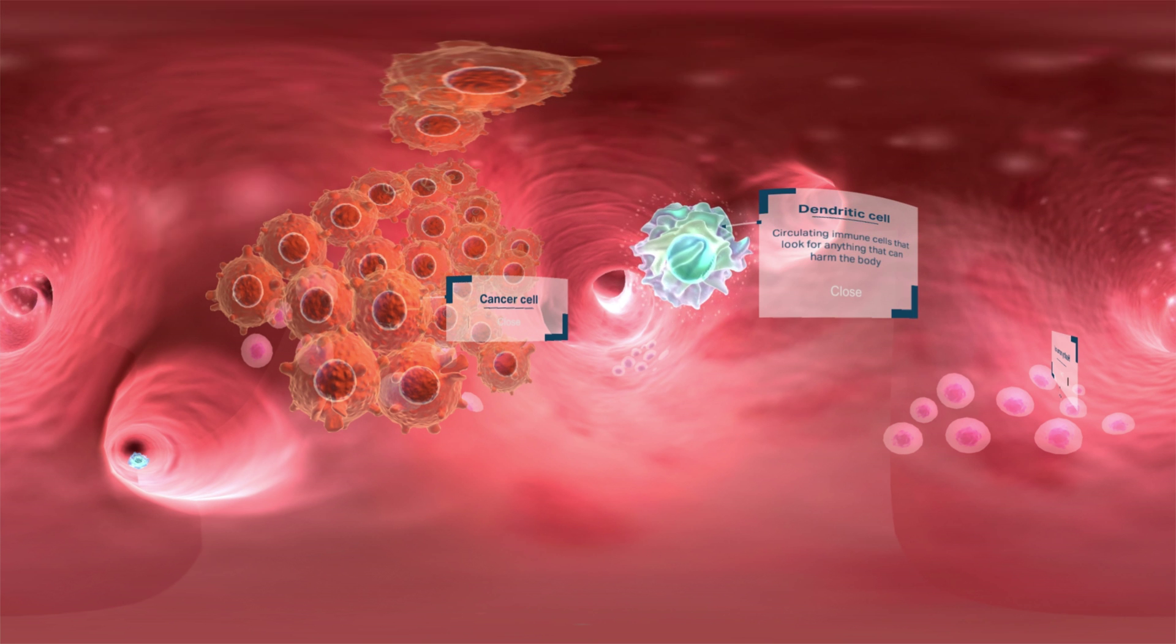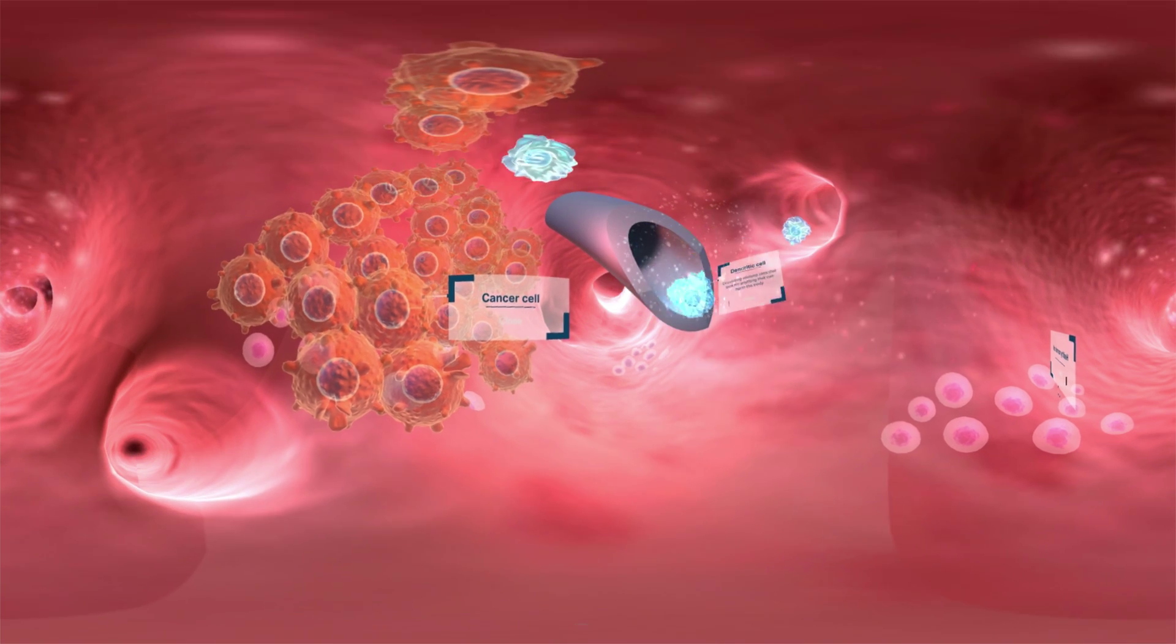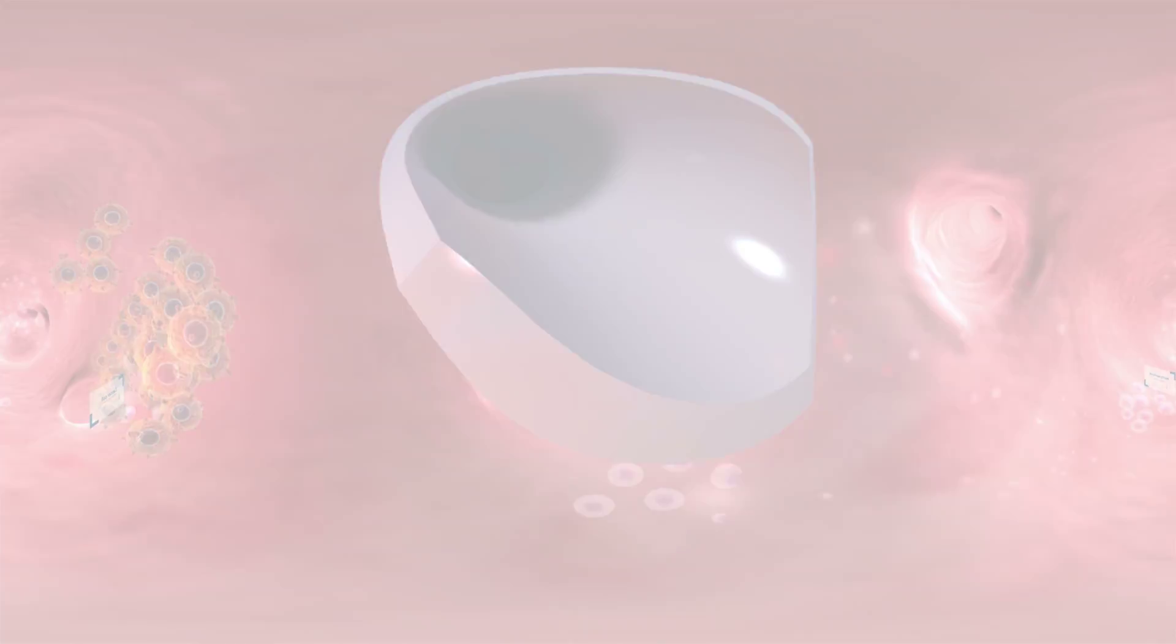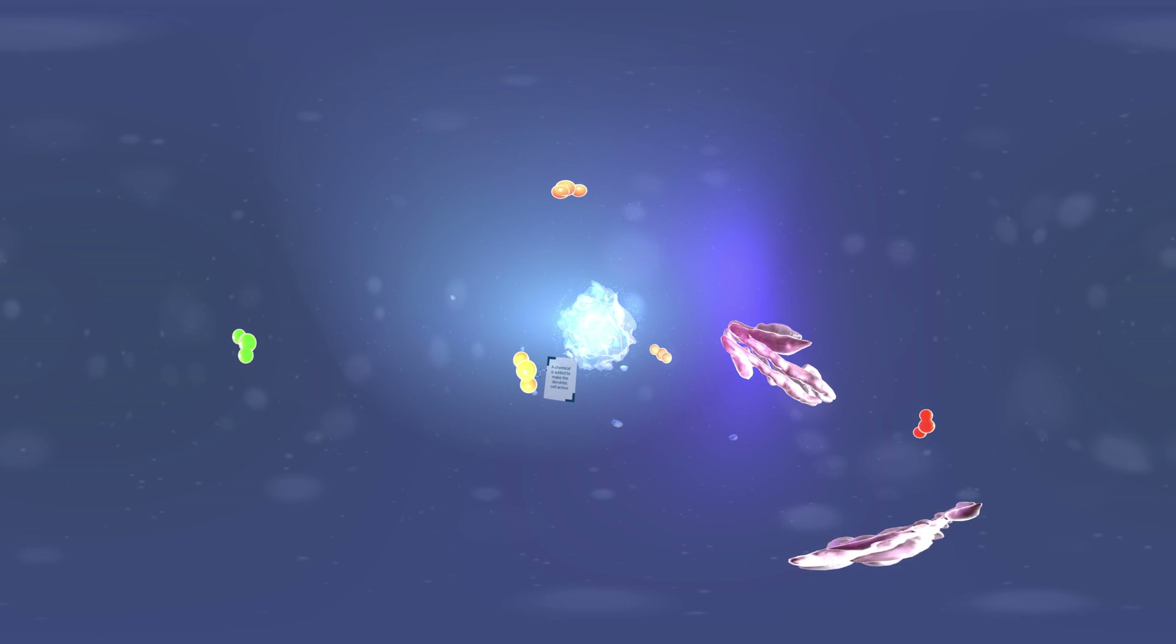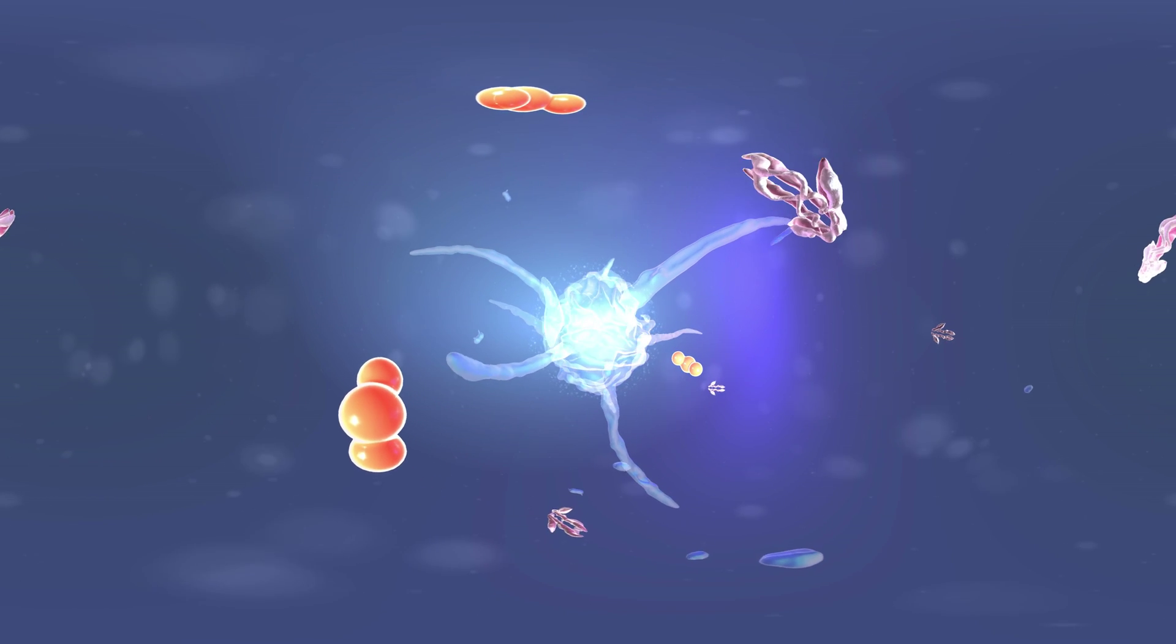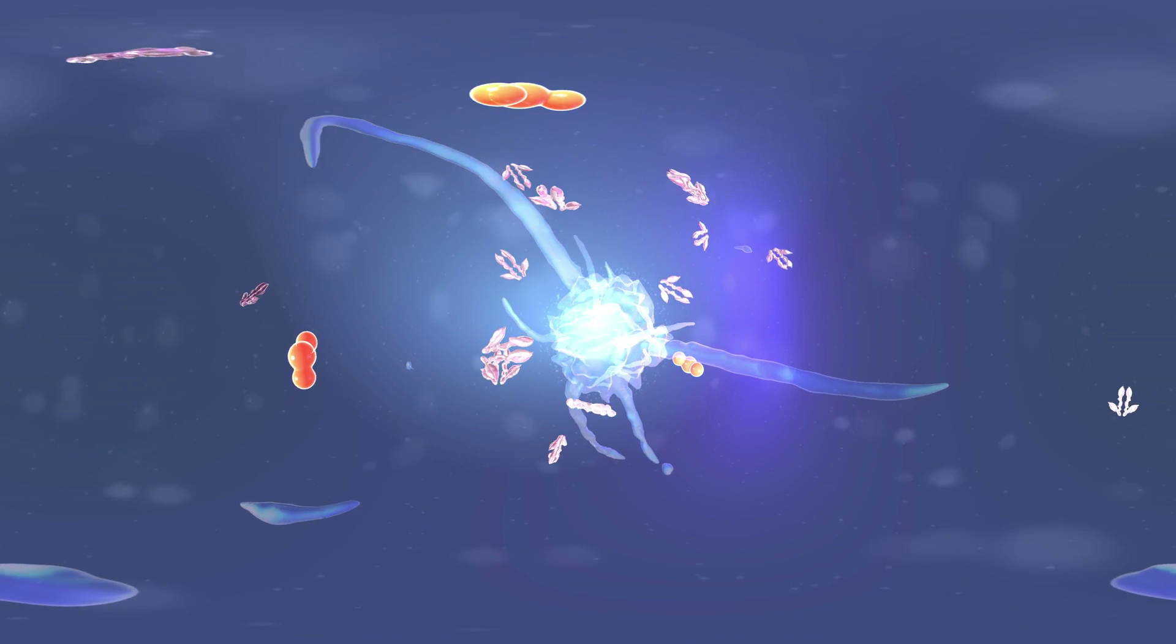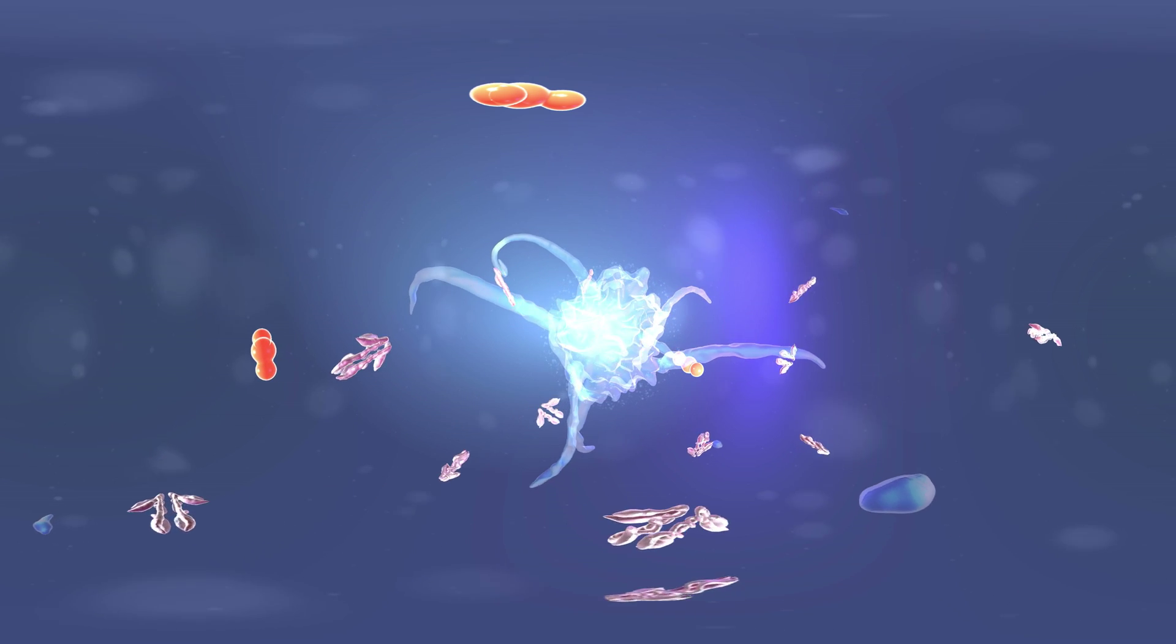We can teach dendritic cells how to read cancer as foreign. Scientists at the Malligan Institute purify these dendritic cells and prepare them for the test tube. The Malligan Institute vaccine involves adding unique chemicals that can supercharge the immune response against cancer. The dendritic cells are loaded with protein fragments from the tumour's surface that will help the immune cells recognise the cancer.